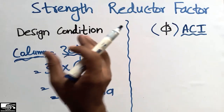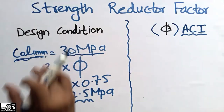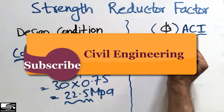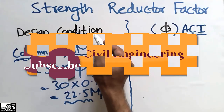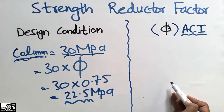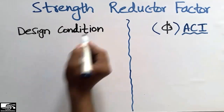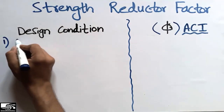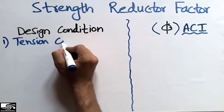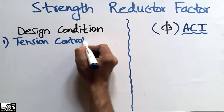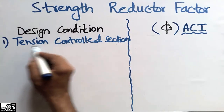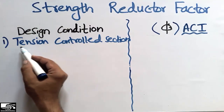These are the design philosophies in civil engineering. We must provide the strength reduction factor for different types of design conditions. Now I will show the different values of the strength reduction factors. The first design condition is the tension control section — tension control sections are those sections that show tensile behavior.